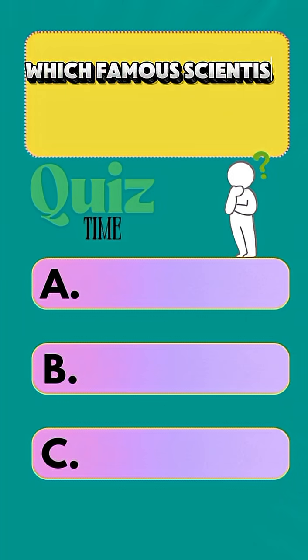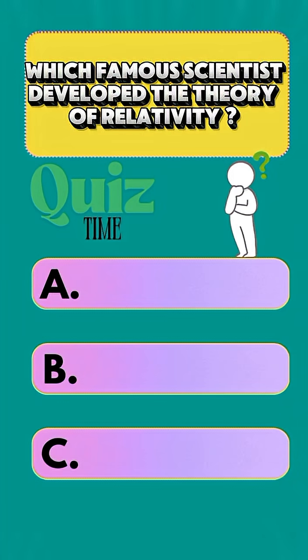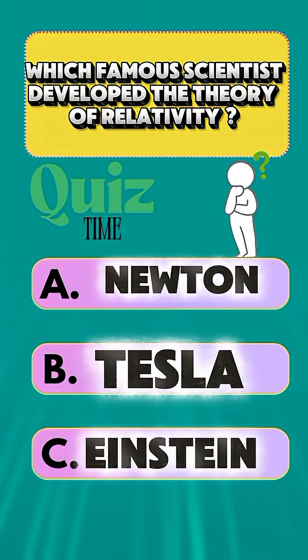Question 2. Which famous scientist developed the theory of relativity? A. Newton. B. Tesla. C. Einstein.